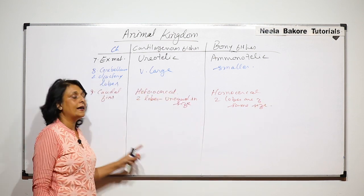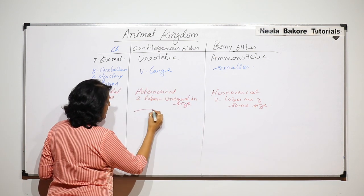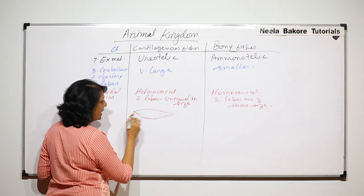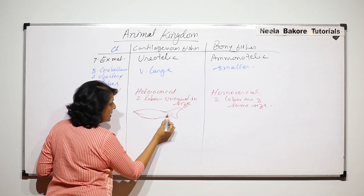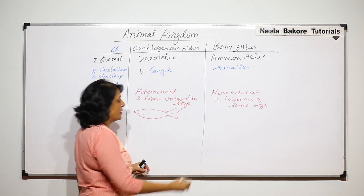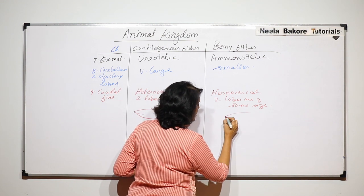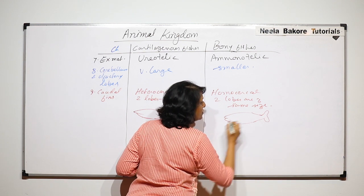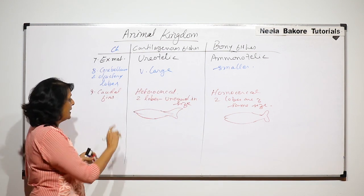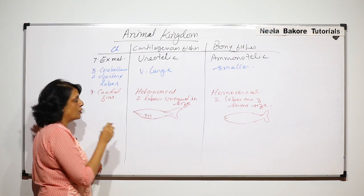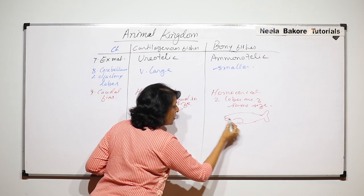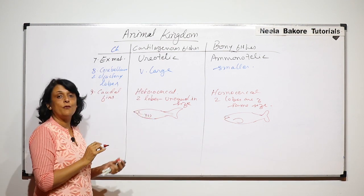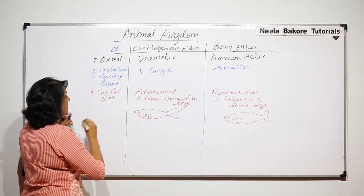As seen in the diagrams: when we draw a cartilaginous fish we show the ventral mouth and a tail fin where one lobe is larger and one is smaller. In bony fishes the mouth is anterior and both lobes of the tail fin are equal. Additionally, in cartilaginous fishes the gill slits are visible from outside, whereas in bony fishes the operculum covers them.